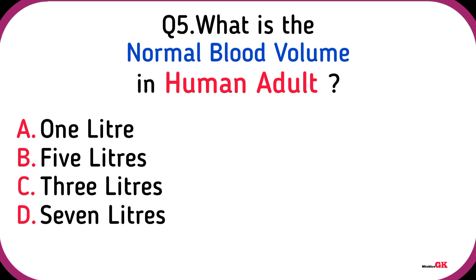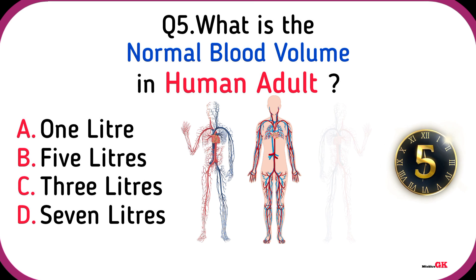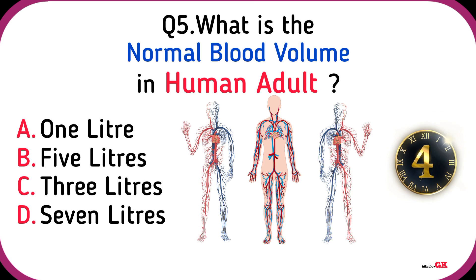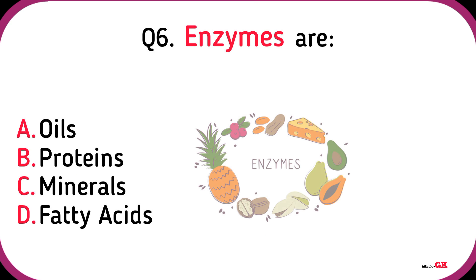High level of uric acid in the blood causes gout. What is the normal blood volume in a human adult? 5 liters. Enzymes are proteins.